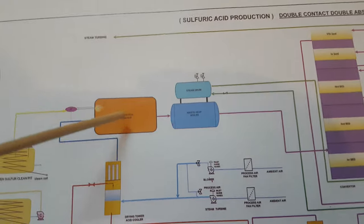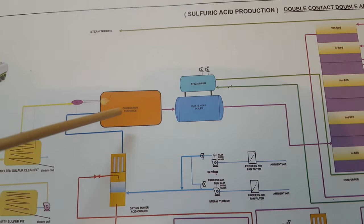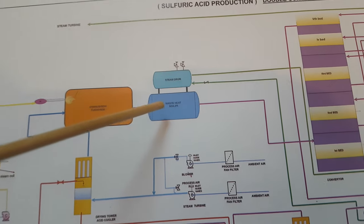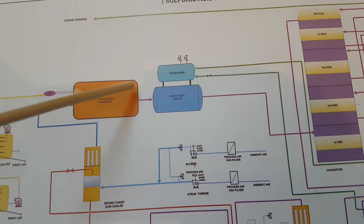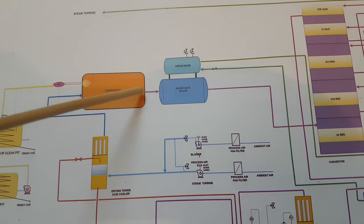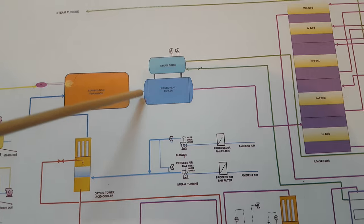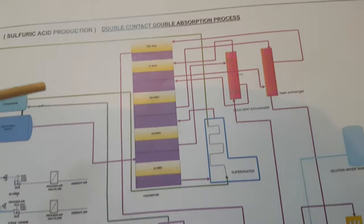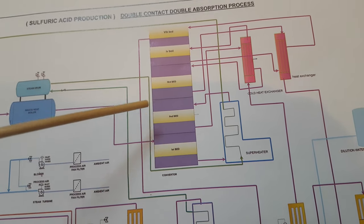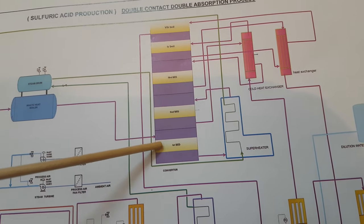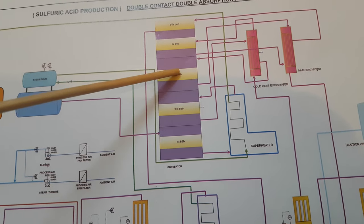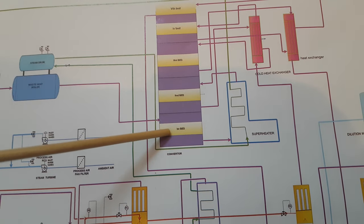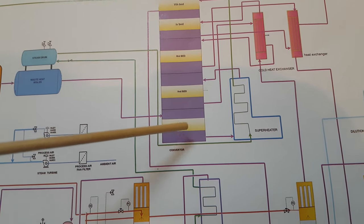After that we have the combustion furnace, where combustion takes place. Sulfur reacts with oxygen and turns to sulfur dioxide. This is the waste heat boiler — the furnace temperature is around 1000°C, so we have to remove that heat from the process gas. The waste heat boiler removes the heat and generates steam. This is the catalytic converter, which has five beds — one, two, three, four, five — or you can pick three or four beds as per your acid production requirement. The beds have V₂O₅, vanadium pentoxide catalyst.